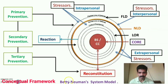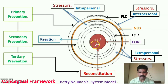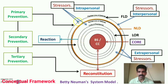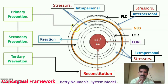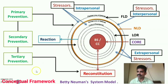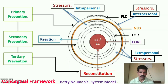The diagrammatic representation of the Neuman System Model consists of four major concepts: the client system (including basic structure, line of resistance, normal line of defense, and flexible line of defense), stressors (intrapersonal, interpersonal, and extrapersonal), prevention measures (primary, secondary, and tertiary), and reconstitution. Primary prevention prevents stressor inversion of the flexible line of defense; secondary prevention strengthens the line of resistance after reaction; and tertiary prevention supports reconstitution and stabilization in the normal well-being state.